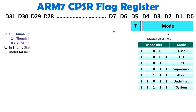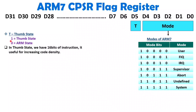After the mode bits, we have the T bit at D5. This T bit explains which state ARM7 is in. If the T bit equals 1, ARM7 is in Thumb state. If T equals 0, ARM7 is functioning in ARM state. ARM is a 32-bit processor and supports 32-bit instructions, but that support is in ARM state.